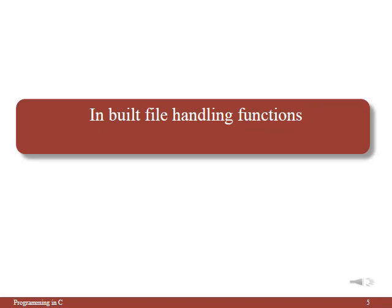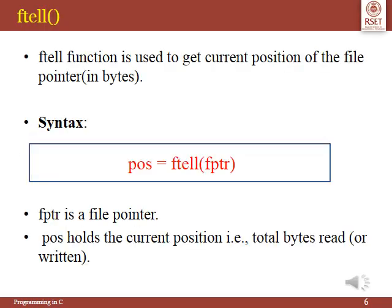The next topic covers the various inbuilt file handling functions in C. The ftell function tells us about the current position in the file in bytes. The syntax is: pos = ftell(fptr), where fptr is a file pointer and pos holds the current position, i.e., the total bytes read or written. For example, if a file has 10 bytes of data and ftell returns 4, it means 4 bytes have already been read or written.